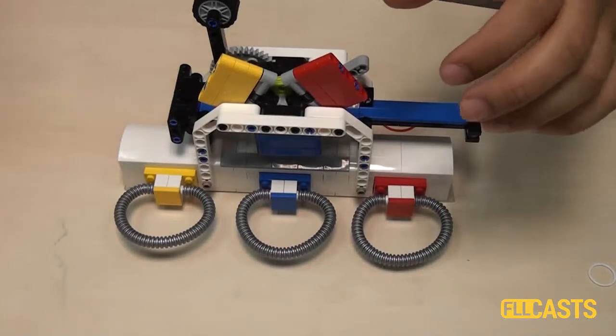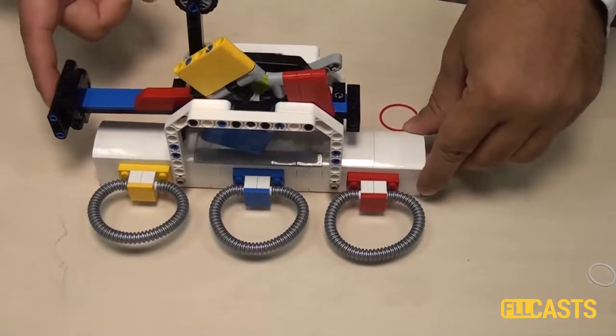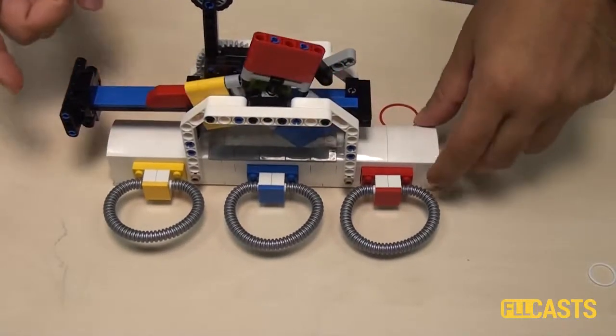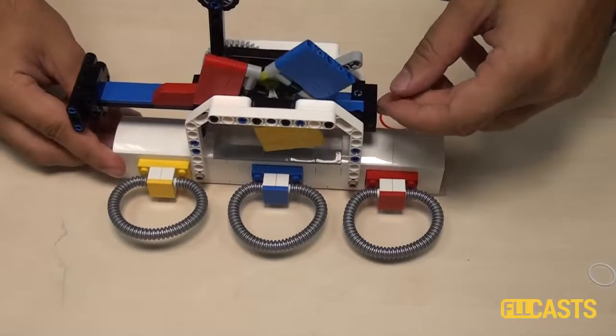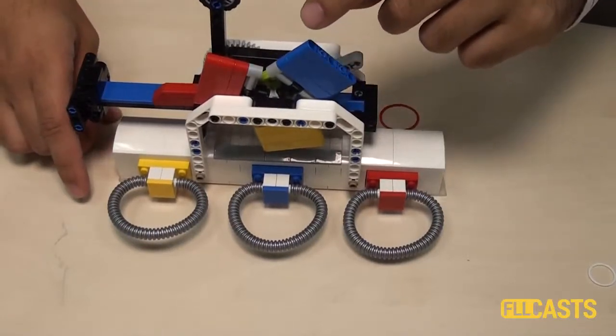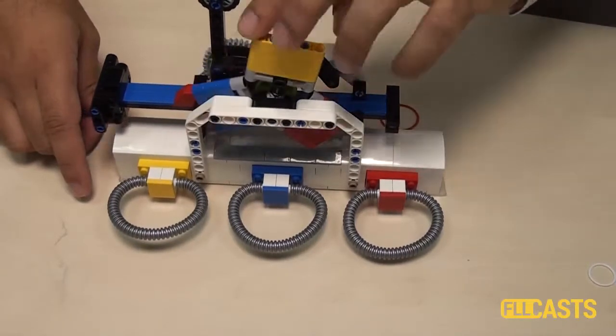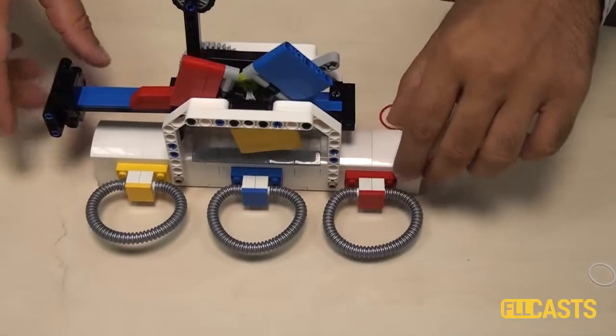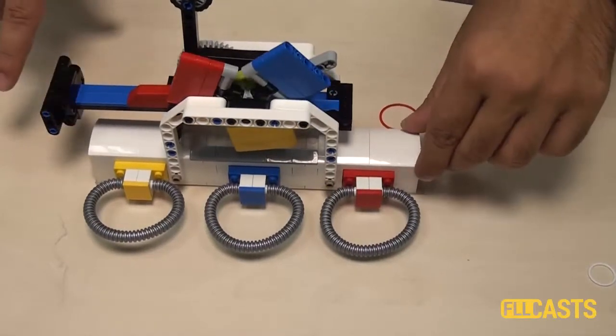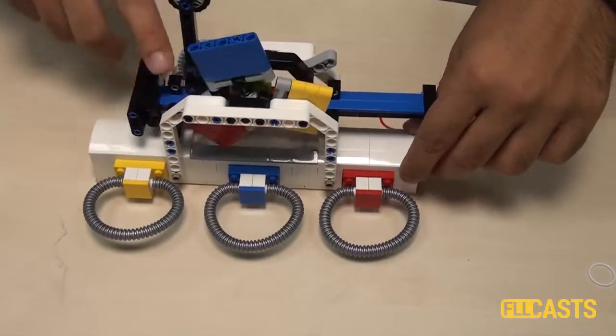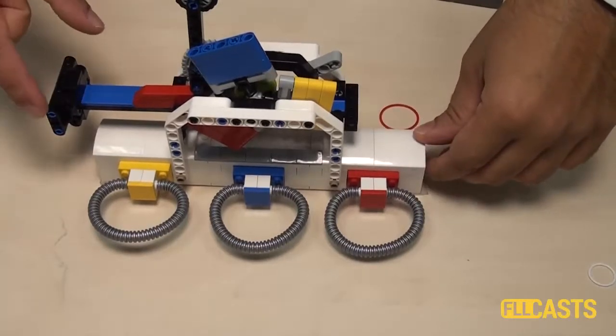The mission was quite challenging because there is a random element here. When you push the attachment it is always a different color and depending on the color you get the different loops. The challenge is that this whole module must turn at least 360 degrees, so it must make a full circle. So you can't just push it very slightly and get blue, you must push it at least to 360 degrees.